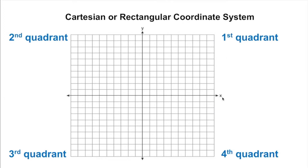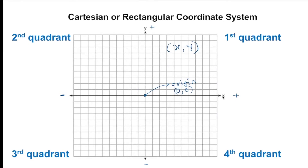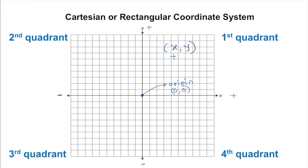Regarding signs: x to the right is always positive and x to the left is always negative. Moving along y, up is always positive and below is negative. The intersection point is the origin, which is always (0, 0) — x is zero and y is zero. We write coordinates as x comma y. In the first quadrant, x is positive going right and y is positive going up, so any point in quadrant one is positive, positive.